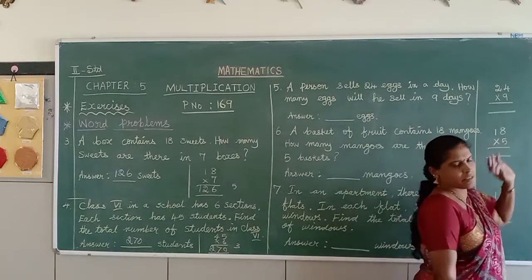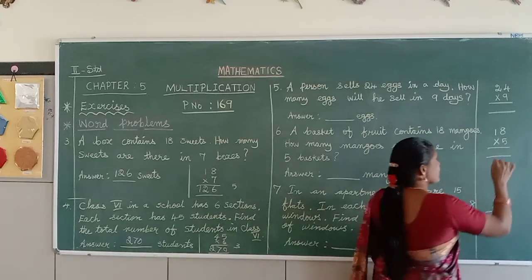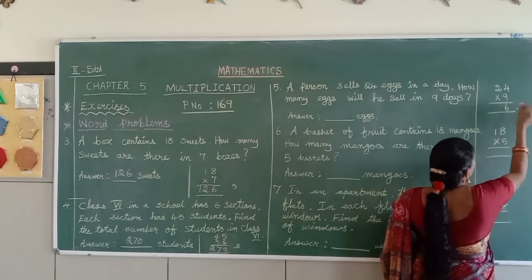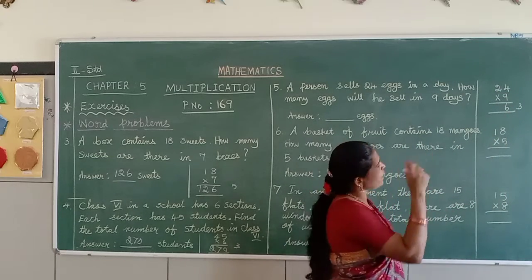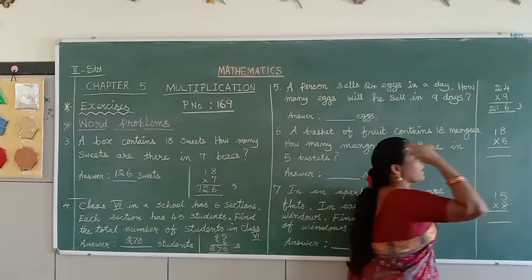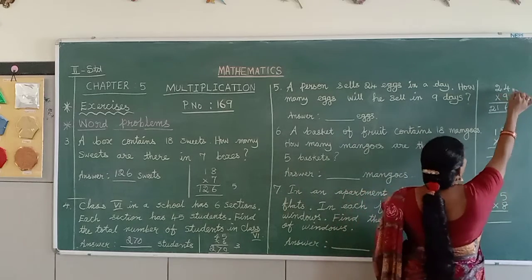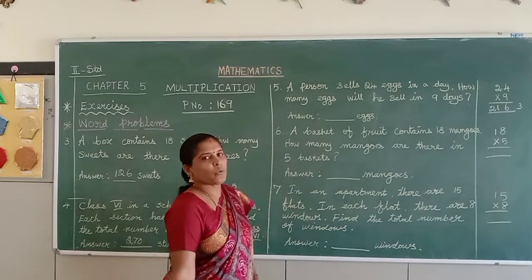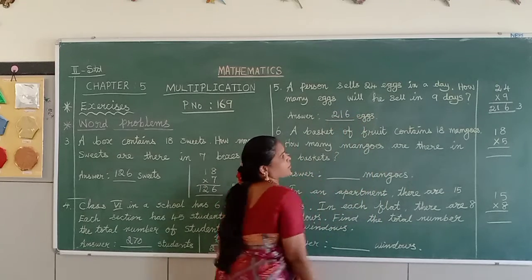Now we can do the sum. 9 fours are 36 — from the 9-times table up to 4, say 9 fours are 36: write 6 in the ones place and carry 3. Then 9 twos are 18; 18 plus 3 equals 21. So 24 into 9 is equal to 216. In total, 9 days he sold 216 eggs.